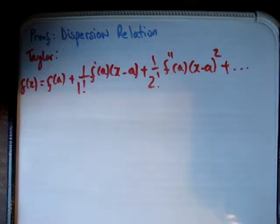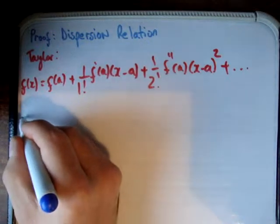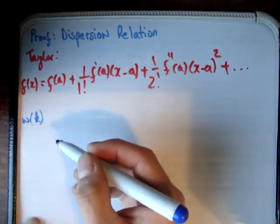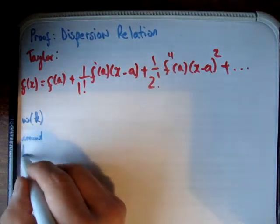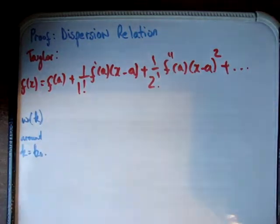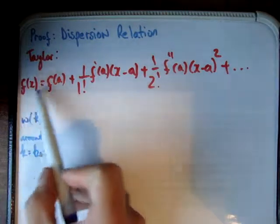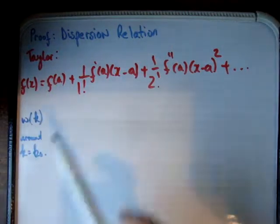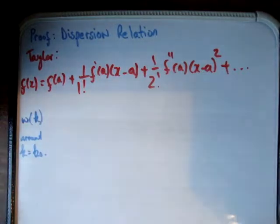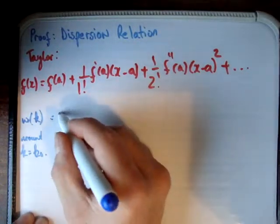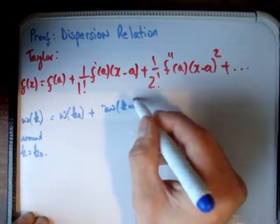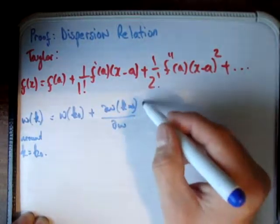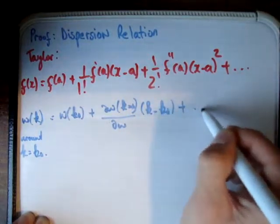Just to give an example of this, if I want to get omega of k around k equals k₀. A Taylor expansion makes up the function f of x using an infinite sum — the more terms you use, the closer you get to f of x. These are useful for analyzing other functions. So applying this here we get: omega of k₀ plus d omega dk times k minus k₀ plus smaller terms.